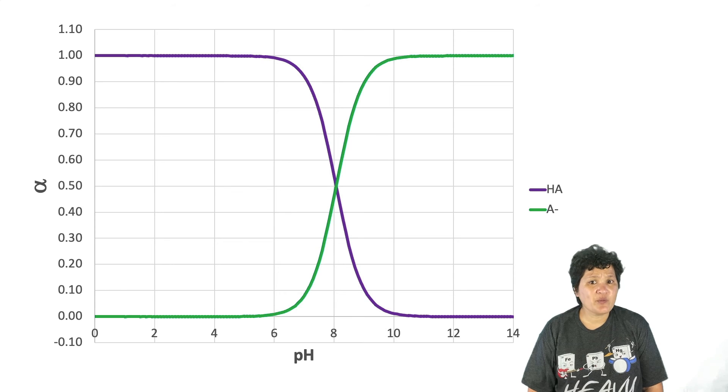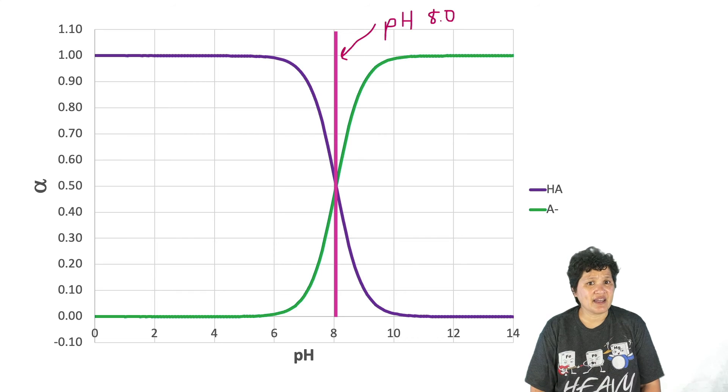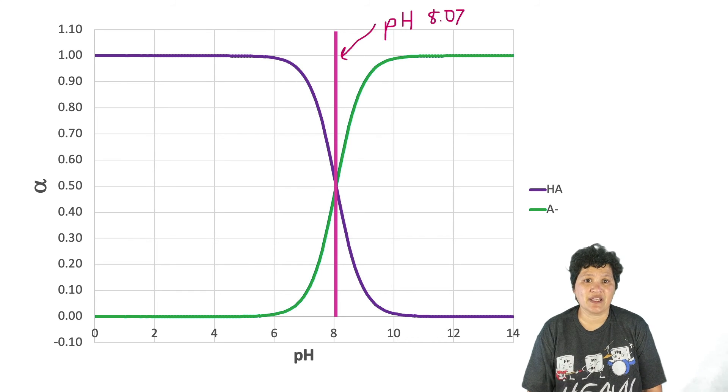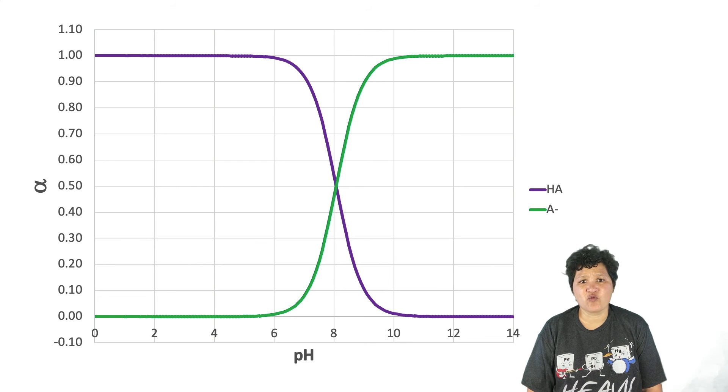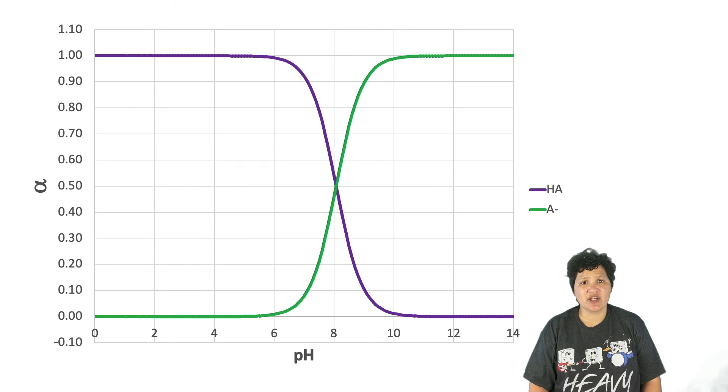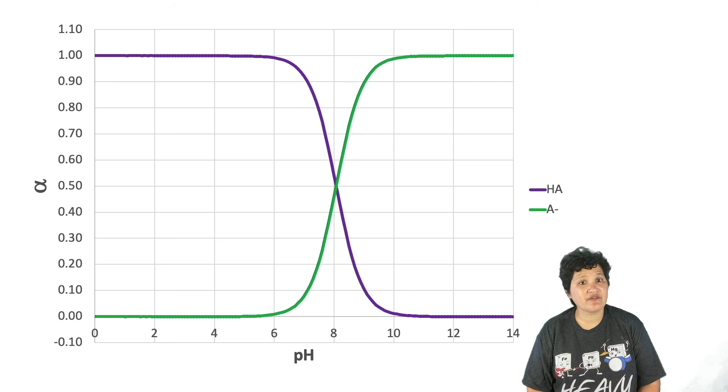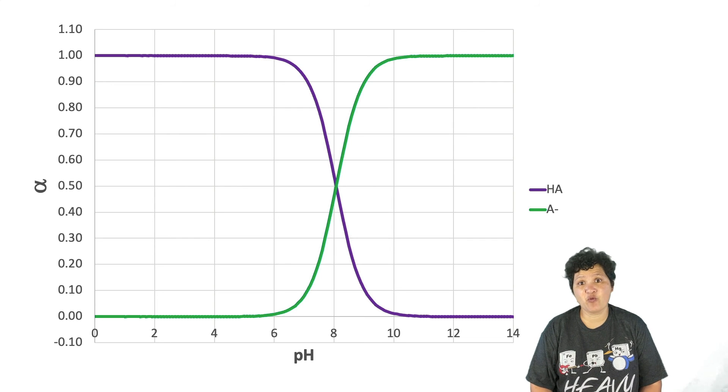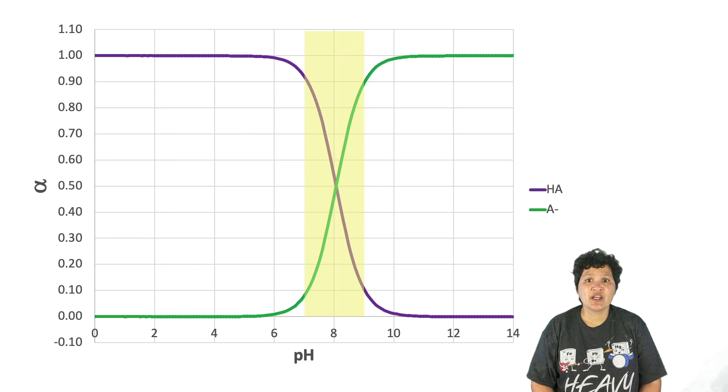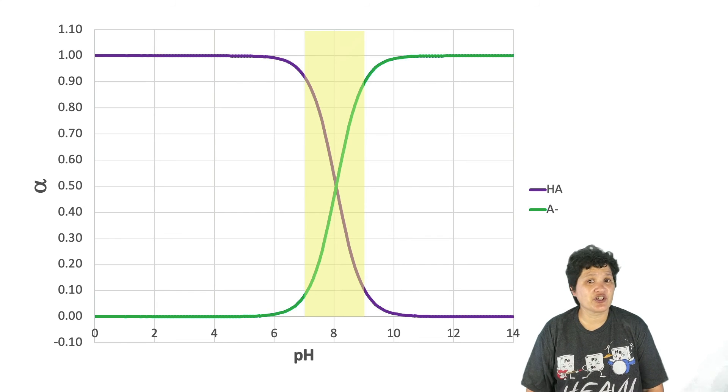One thing this graph shows is something you may have learned about in Gen Chem, either while talking about weak acid-strong base titrations or while talking about buffers. When your pH is equal to the pKa, your concentrations of acid and conjugate base are equal. Another thing this graph highlights is why we pick buffers in a certain range. In general, when you're making a buffer solution, you want to find a buffer whose pKa is within one pH point of the desired pH. You can see what happens if we get outside of that range. We either have very little acid form or very little base form. As a result, the solution no longer has much ability to absorb pH changes.